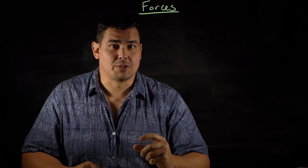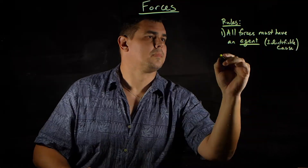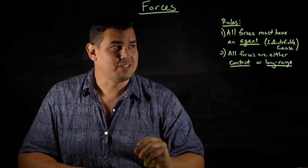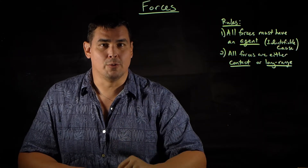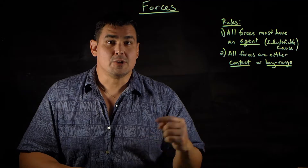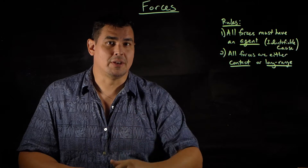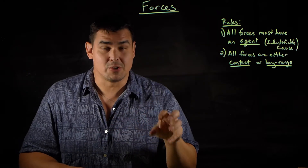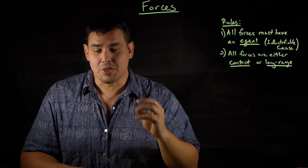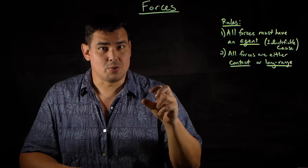There are a few rules for identifying forces. First, all forces must have an agent — an identifiable cause of the force. For instance, if you kick a ball and it rolls along the ground, there's no force pushing it forward anymore once you've given it the push. That's just its inertia keeping it going. If you think there's a force because something's moving but you can't name it, it's probably just inertia.